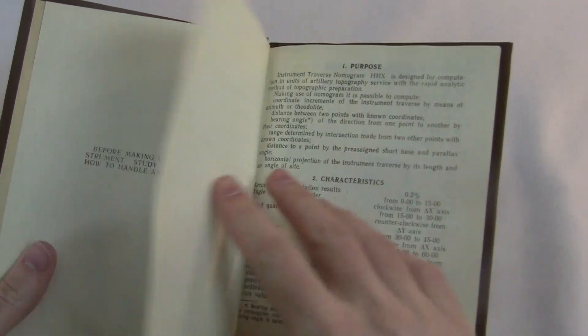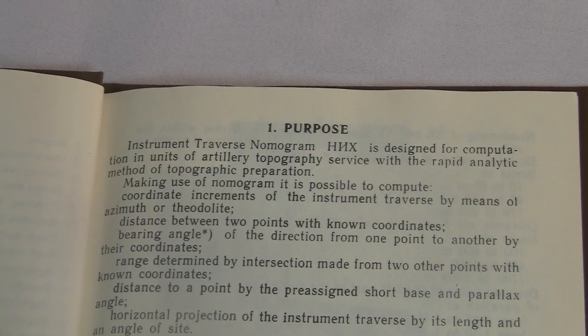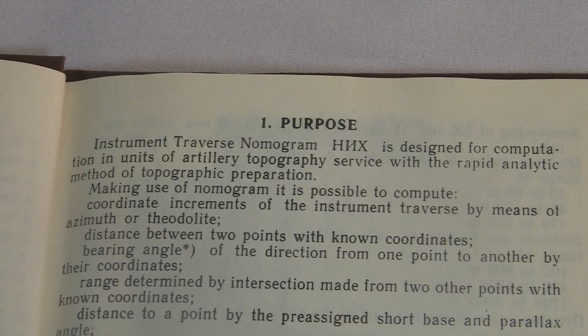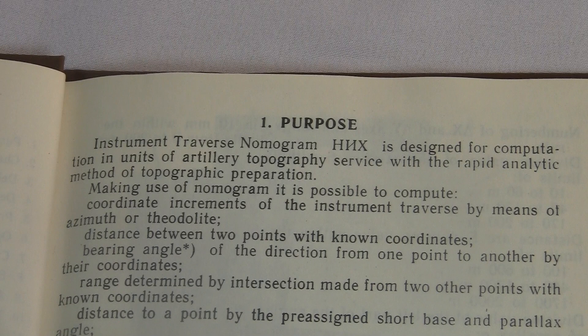It's not inaccurate as far as I can tell, but it reads like a computer translation. "Instrument Traverse Nomogram is designed for computation in units of artillery topography service with the rapid analytic method of topographic preparation." I guess I know most of those words, but it still doesn't make a lot of sense.